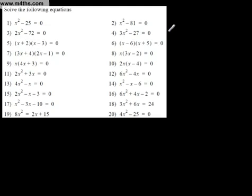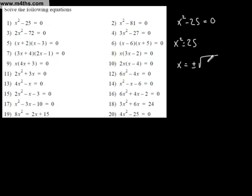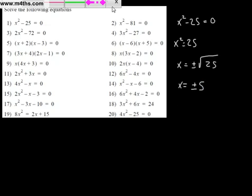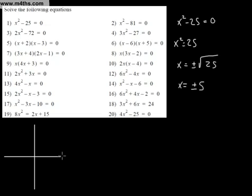Let's look at some problems. This one is the perfect scenario: x² - 25 = 0. To solve this, there are no x terms, so we can simply add 25 to both sides: x² = 25. Now, if we square root both sides, x = ±√25, and x = ±5. The graph of x² - 25 is symmetric about the y-axis, with the minimum point at (0, -25).